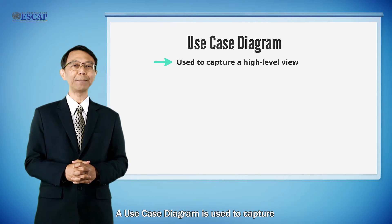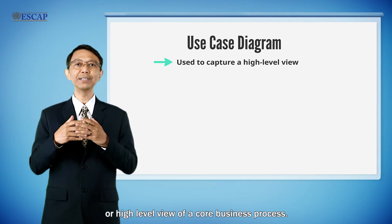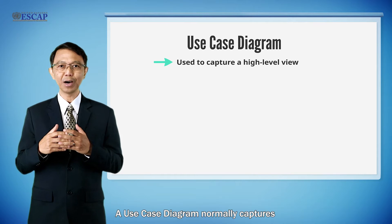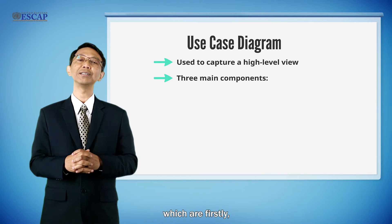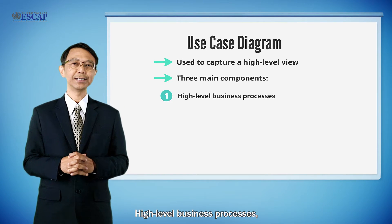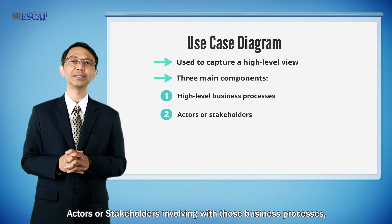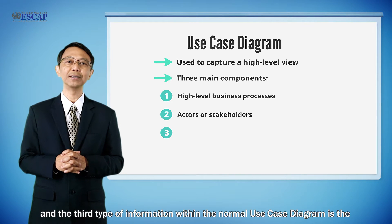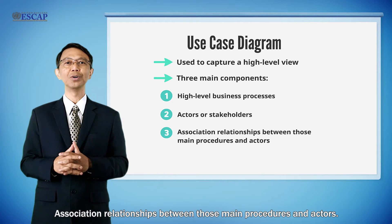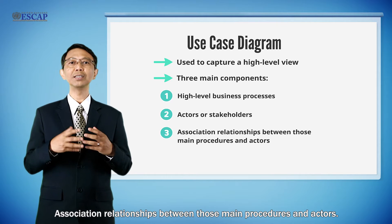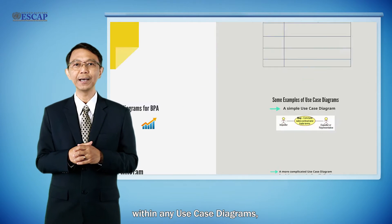A use case diagram is used to capture a high-level view of a business process. A use case diagram normally captures three main types of information: firstly, the high-level business processes; secondly, actors or stakeholders involved with those business processes; and thirdly, the associations or relationships showing the relationship between those main procedures and actors.